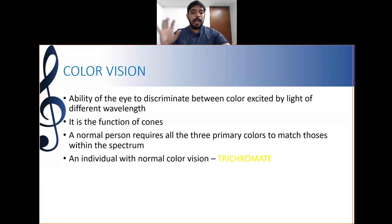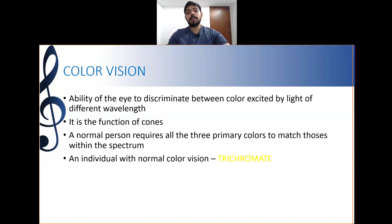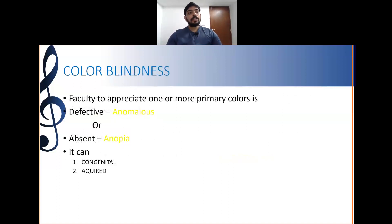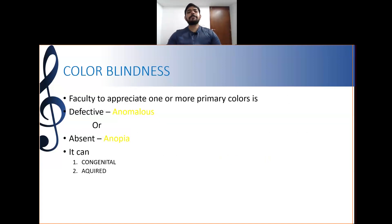An individual with normal color vision is known as trichromatic. If there is any difficulty in appreciating one or more primary colors, that is considered defective or anomalous color vision.